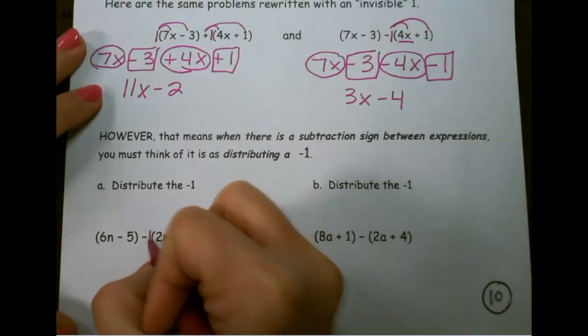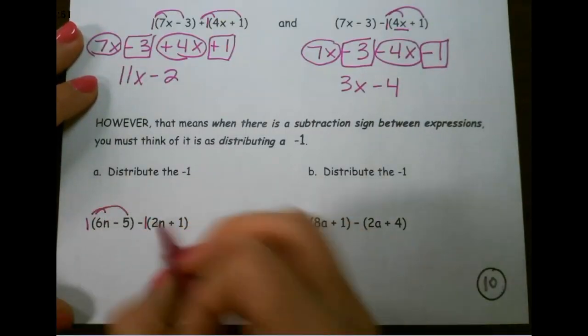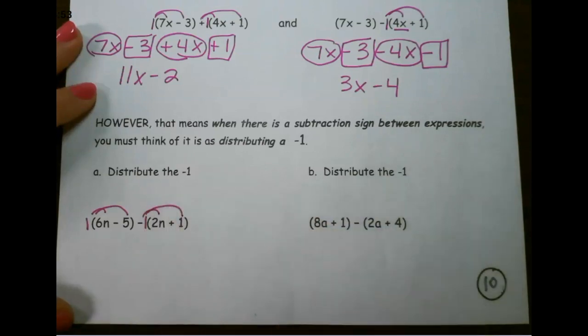On this next example, again, we have invisible 1s. This one is just positive 1, so it doesn't change anything. And this one would be distributing negative 1, so we change the sign of everything in the parentheses.